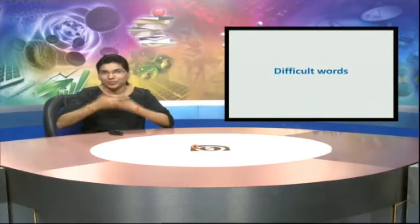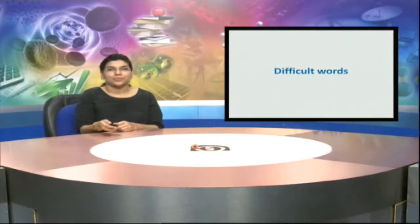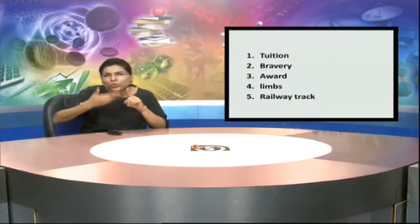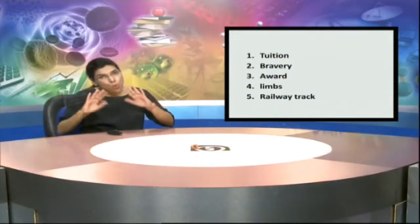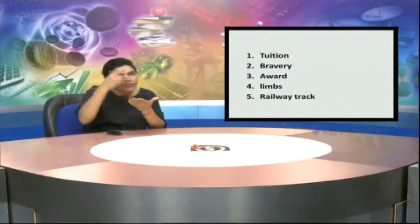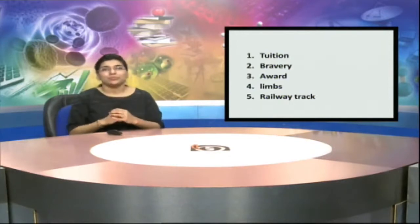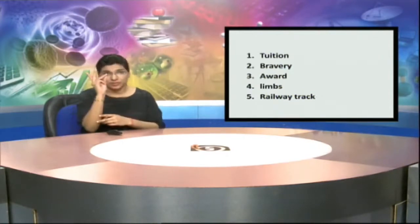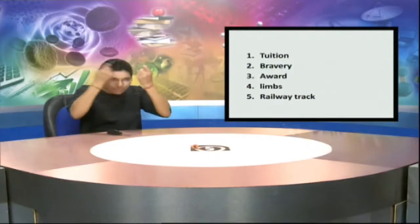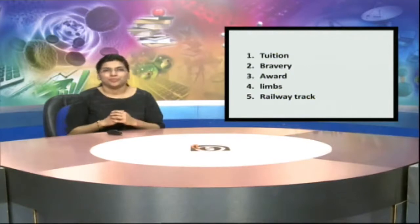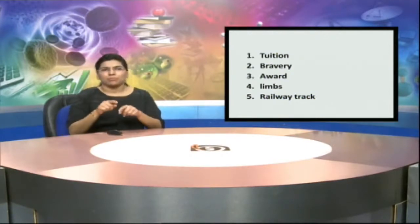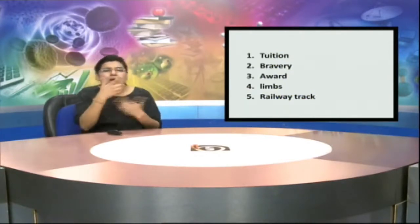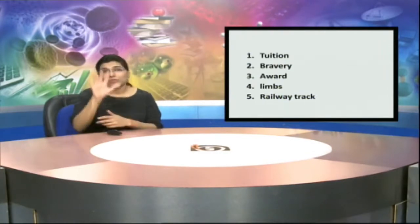Let us now understand the difficult words. The first word is tuition — when we are at home, we sometimes go to nearby houses to learn some subjects. The second word is bravery. The third word is award — there are different awards like medals also. The fourth word is limbs — sometimes there are artificial limbs, so this word is used for that.